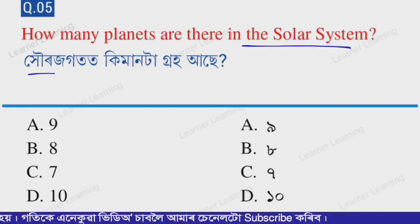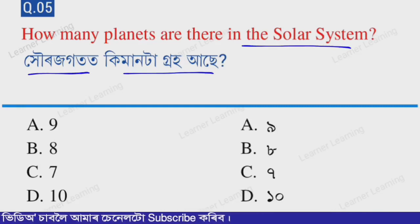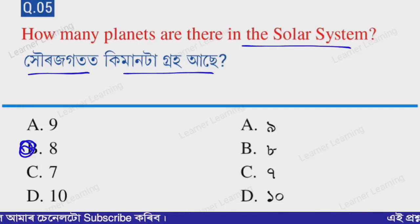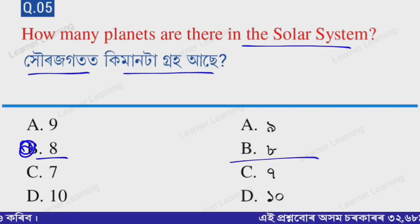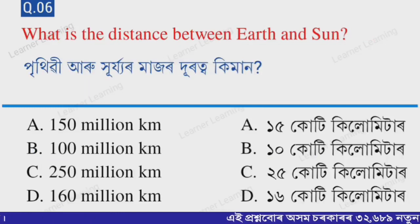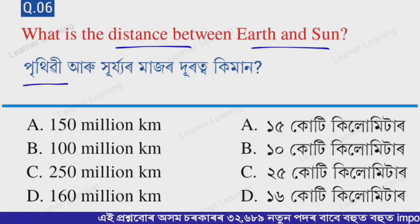Next question: How many planets are there in the solar system? Select from the options. Option B — Eight. There are eight planets in our solar system.